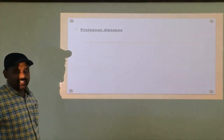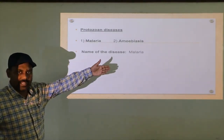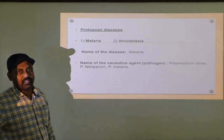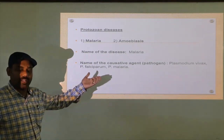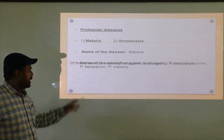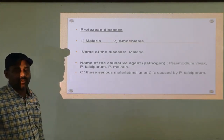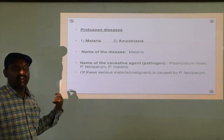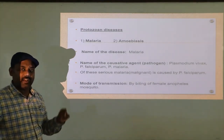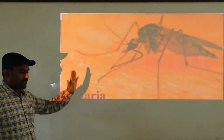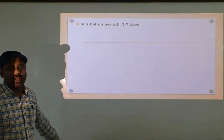Then protozoan diseases — again two examples are there: one is malaria, second one is amoebiasis. First, name of the disease is malaria, and the causative agents or pathogens — there are three or four: Plasmodium vivax, Plasmodium falciparum, Plasmodium malariae, and one more is Plasmodium ovale. Out of these, the most dangerous or severe malaria — malignant malaria — is caused by Plasmodium falciparum. Next, mode of transmission is only by means of the bite of the female Anopheles mosquito. The incubation period is usually 3 to 7 days; sometimes it may go up to 15 to 20 days.